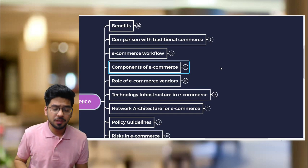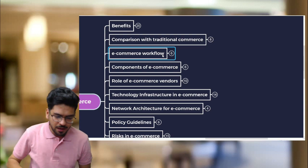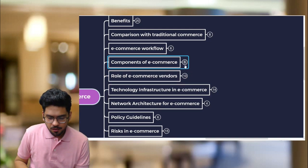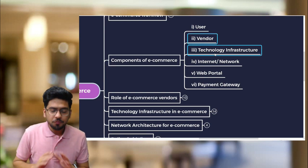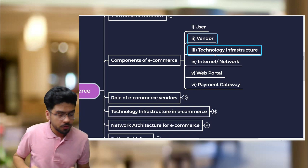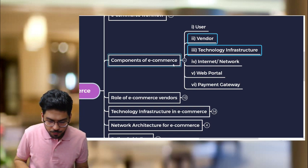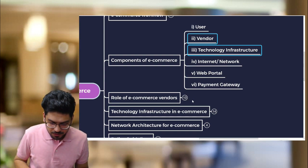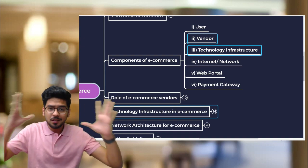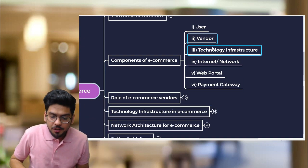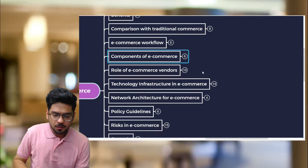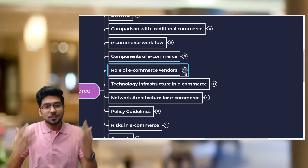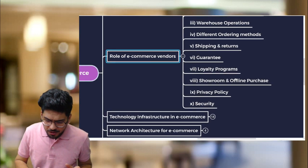Note that the e-commerce workflow has six steps and e-commerce components also number six. Components two and three — the vendor and technology infrastructure — are discussed in detail as separate topics: role of e-commerce vendors, and technology infrastructure in e-commerce. These are very important exam questions.